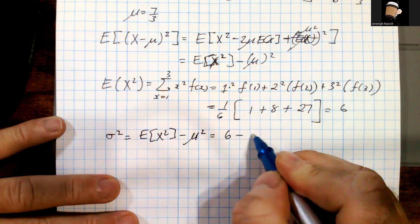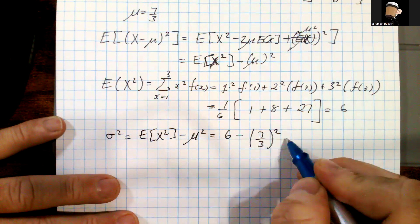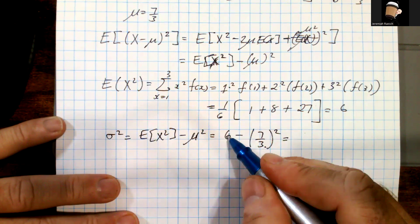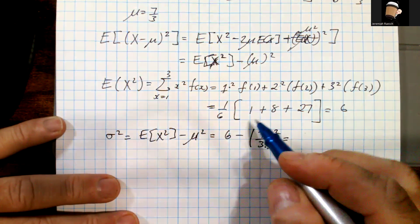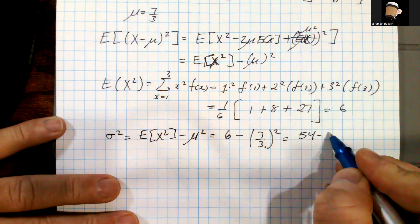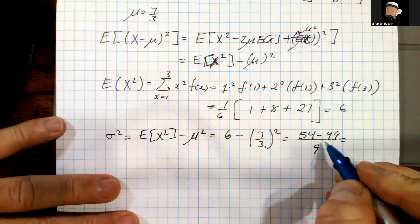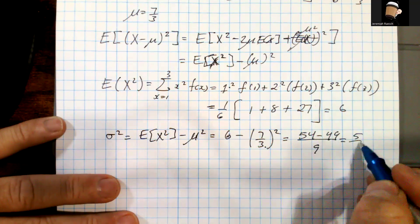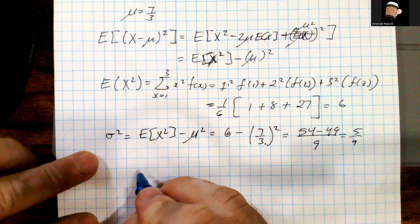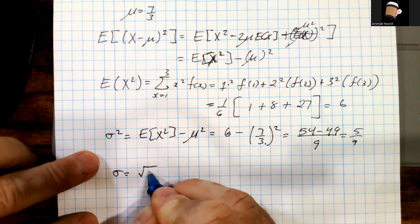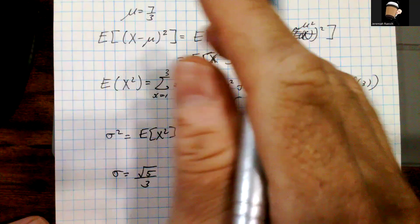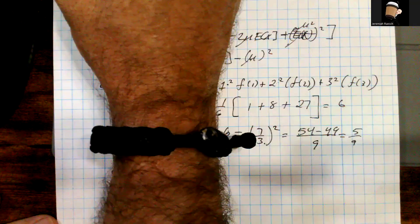So σ² = E[X²] − μ² = 6 − (7/3)² = 6 − 49/9. Converting 6 to ninths: 54/9 − 49/9 = 5/9. That's the variance, and σ = √(5/9), which is the standard deviation for this distribution.